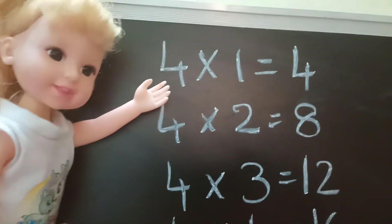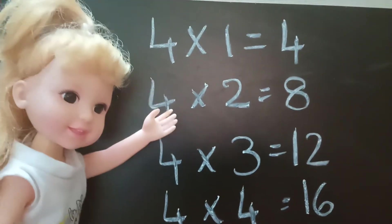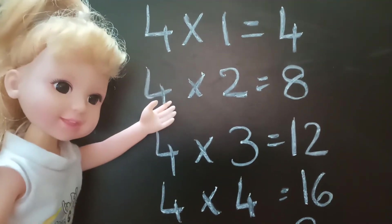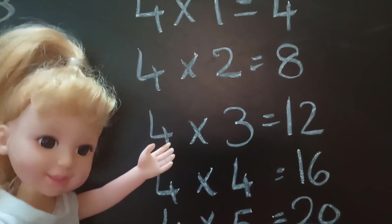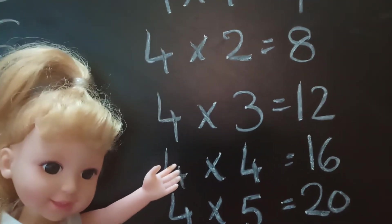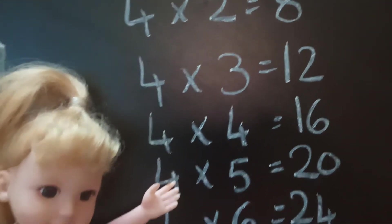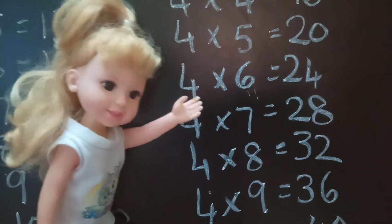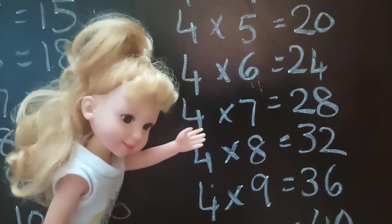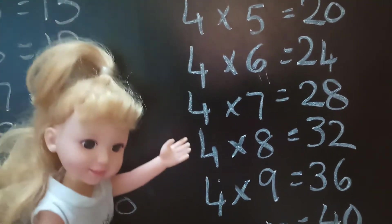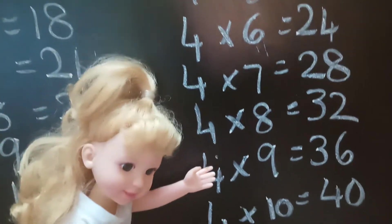Table No. 4. 4×1=4, 4×2=8, 4×3=12, 4×4=16, 4×5=20, 4×6=24, 4×7=28, 4×8=32.